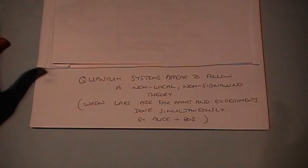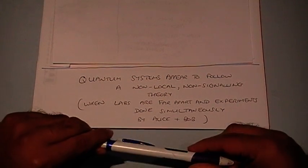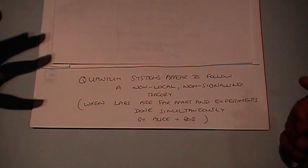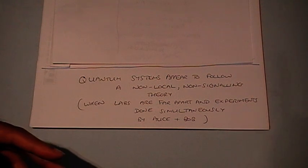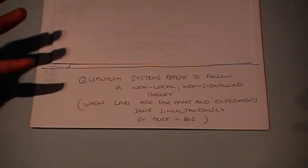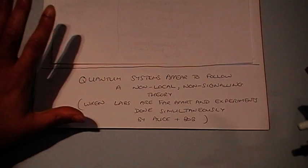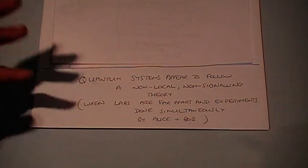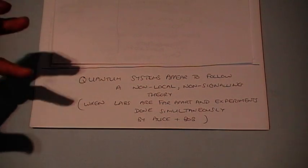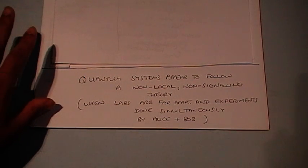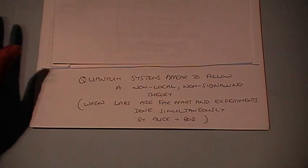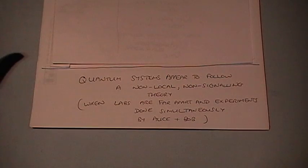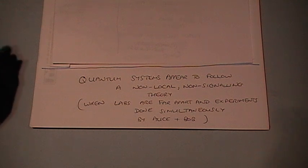Popescu-Rohrlich boxes don't exist in nature as far as we know, but quantum systems are a type of non-local theory. Even when the labs are very far apart and the experiments are done simultaneously, quantum systems appear to be non-local — the response on one side depends upon the choice of experiment made at the other side. Yet the link is not strong enough to send a signal. Nature seems to be communicating under the surface while not allowing us to actually transmit information — something that doesn't happen in classical theories, and one of the key features of quantum mechanics.